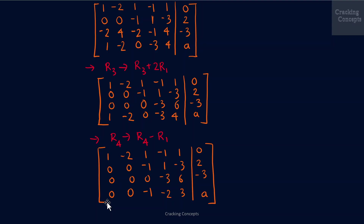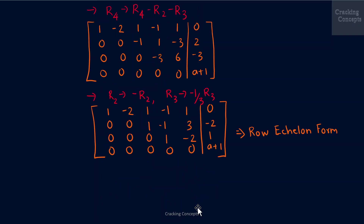Now I will try to make all the elements in the last row zero. I found that when I subtract R4 from R2 and R3, I get the last row as zero. I perform the transformation R4 = R4 minus R2 minus R3. Examining the third row, all elements are multiples of 3, so I multiply it by minus one-third. I also multiply the second row by negative sign to make it positive, transforming R2 as minus R2. This gives the final matrix in row echelon form.